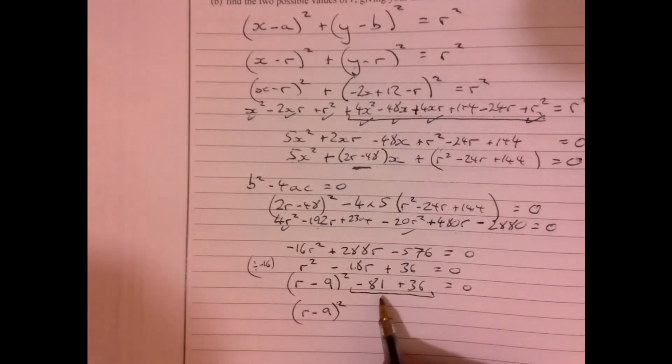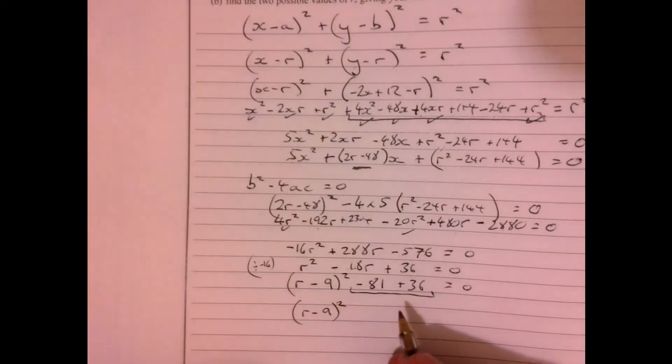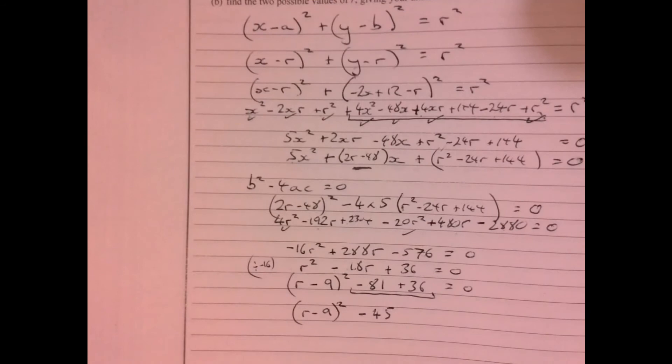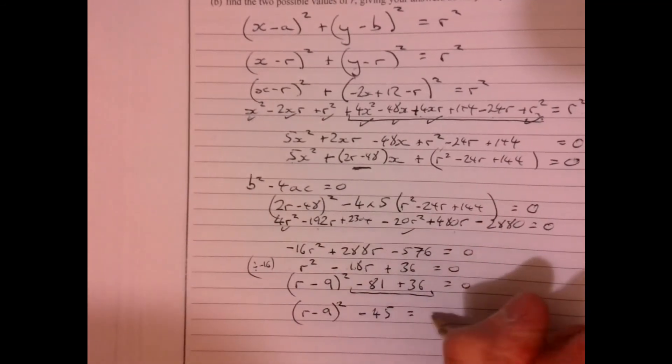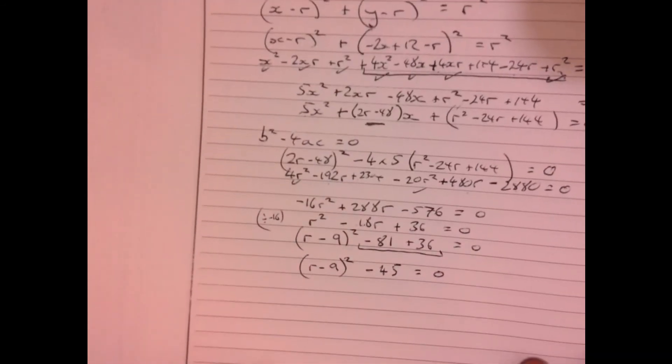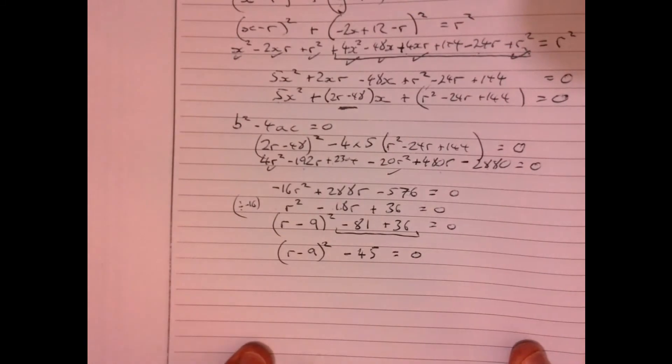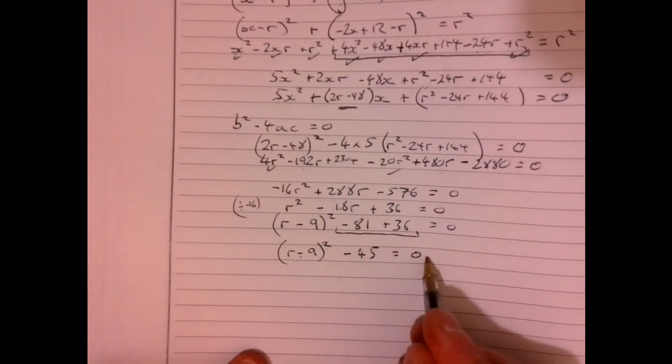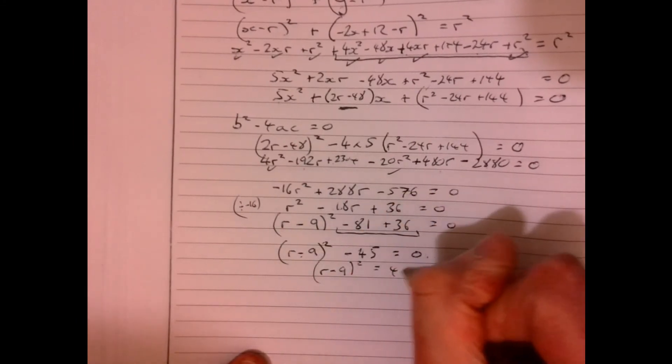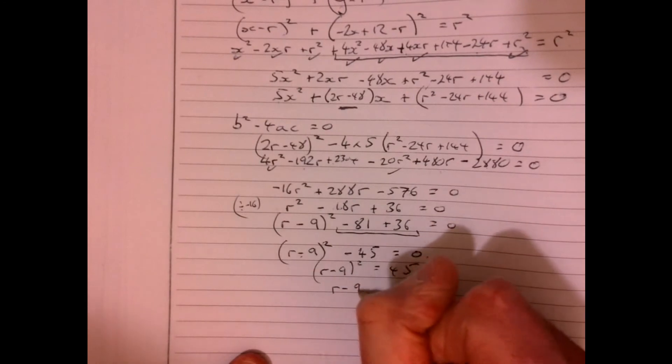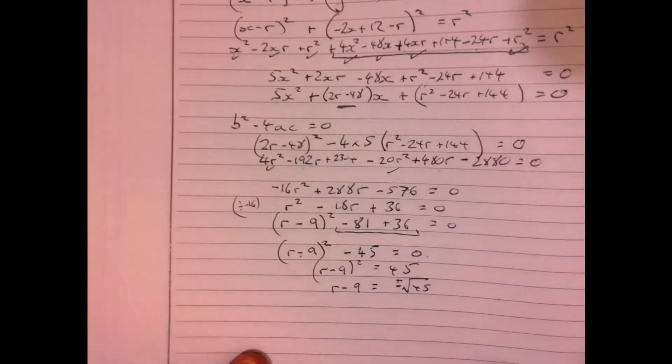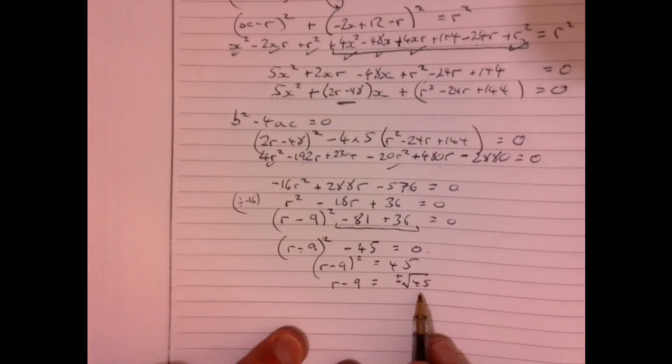So what's that give us? (r - 9)² - 45, yeah I'm thinking about that for a moment, equals zero. Just double checking that, make sure that was right, I don't want to make a silly mistake there. So if we add the 45 to both sides, (r - 9)² equals 45.